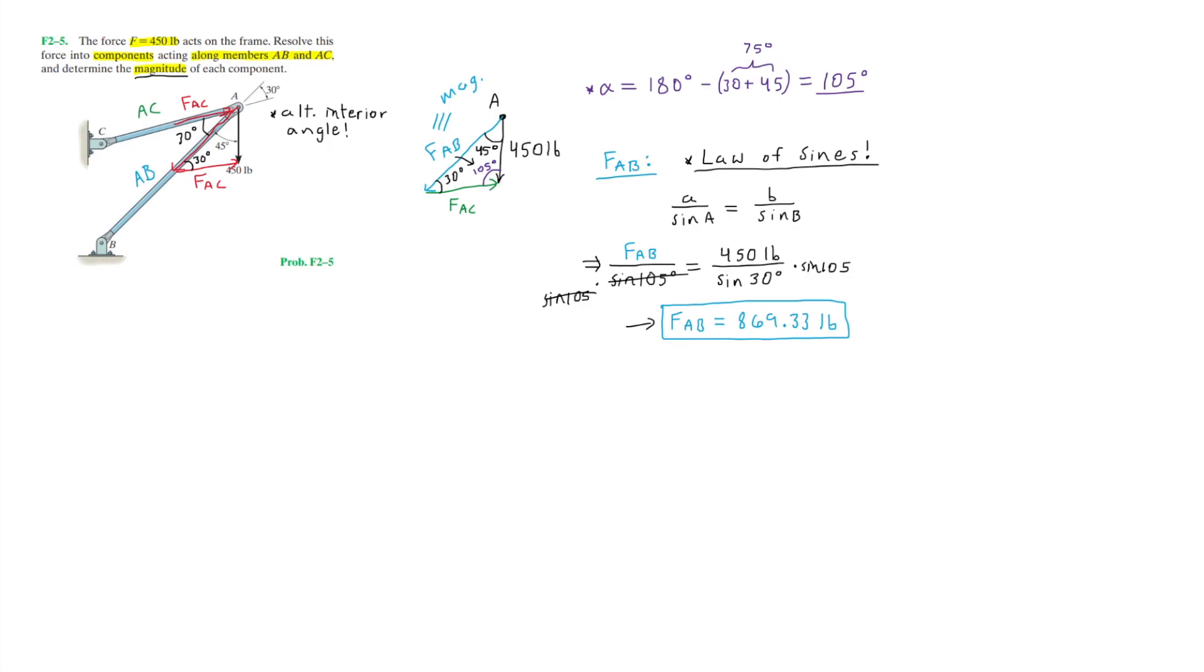Now we are left with the force on member AC, which is FAC. We can basically follow the same process we used to find FAB using the law of sines, except solving for FAC. So using the law of sines, we have FAC over sine of its corresponding angle, which is 45 degrees, is equal to 450 pounds over sine of 30 degrees. We just simply solve for FAC by multiplying sine of 45 to the right side, which will give us force AC is equal to roughly 636.4 pounds.